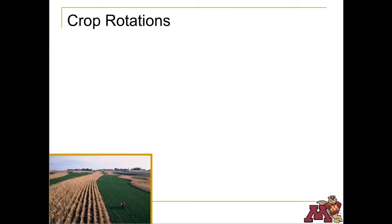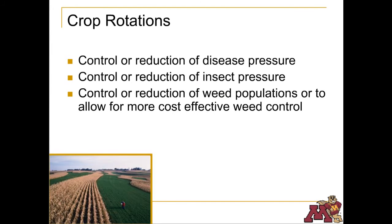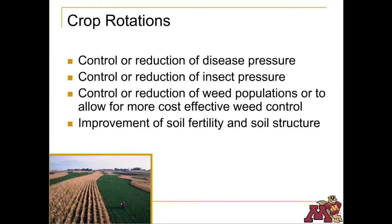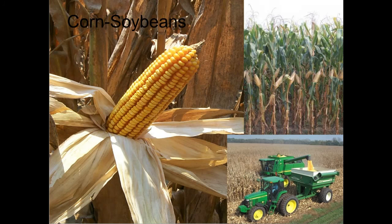In most cases, the same crop is not grown on the same field year after year. This is known as crop rotation. Rotation reduces crop diseases and helps control insects and weeds. It also improves soil fertility and structure, which allows the soils to hold more moisture. Corn and soybeans are the most prevalent crops in Minnesota, and they're often rotated between each other in a two-year crop rotation.